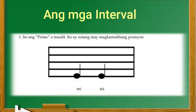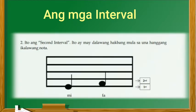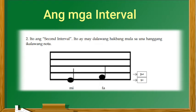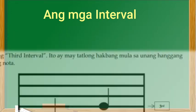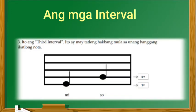Una ay ang prime o inuulit. Ito ay notang may magkaparehong posisyon. Pangalawa ay ang second interval. Ito ay may dalawang hakbang mula sa una hanggang ikalawang nota. Pangatlo, ang third interval. Ito ay may tatlong hakbang mula sa una hanggang ikatlong nota.